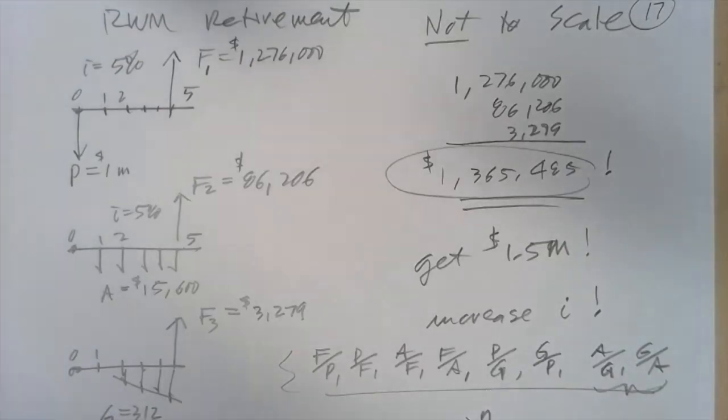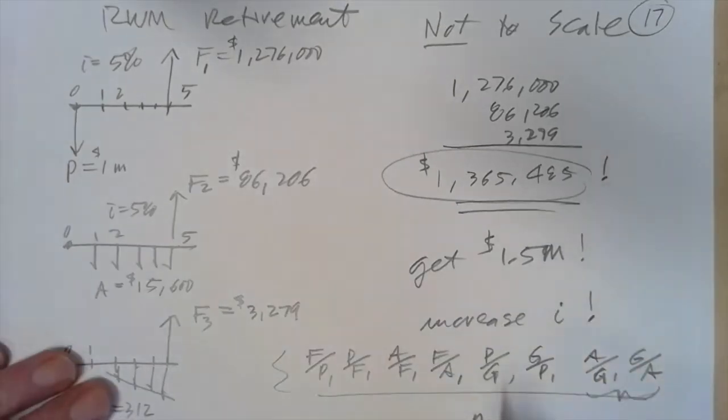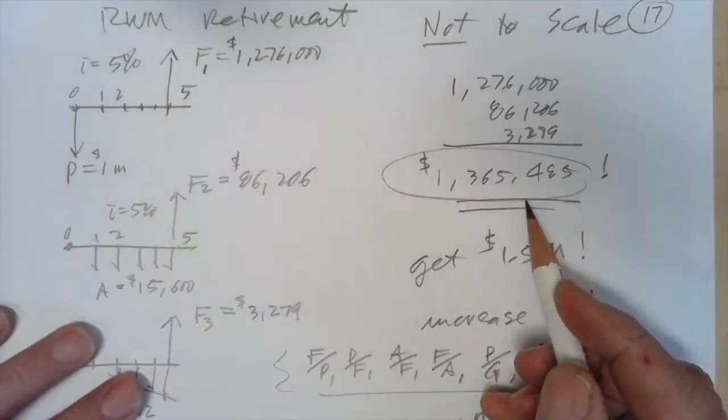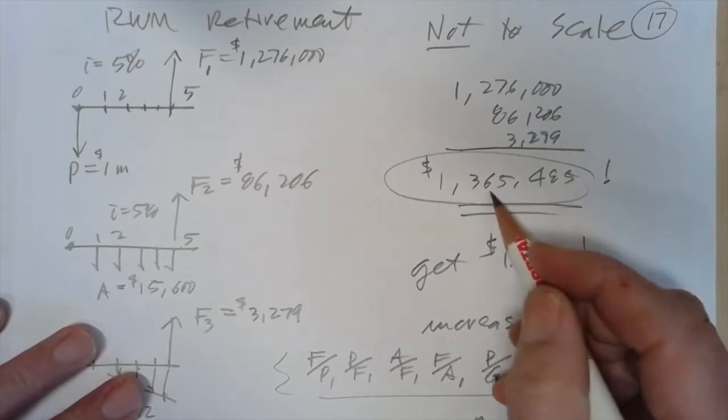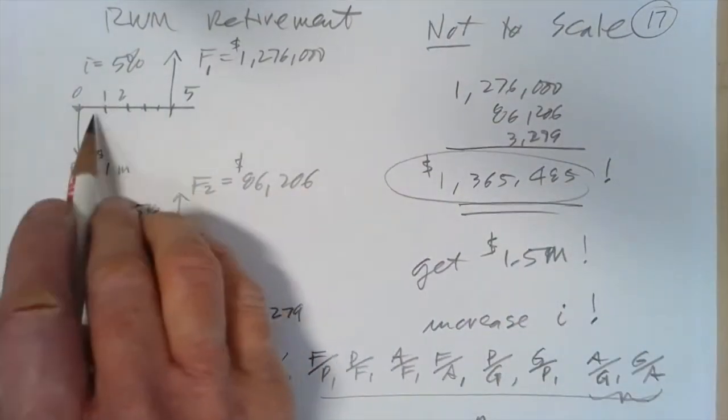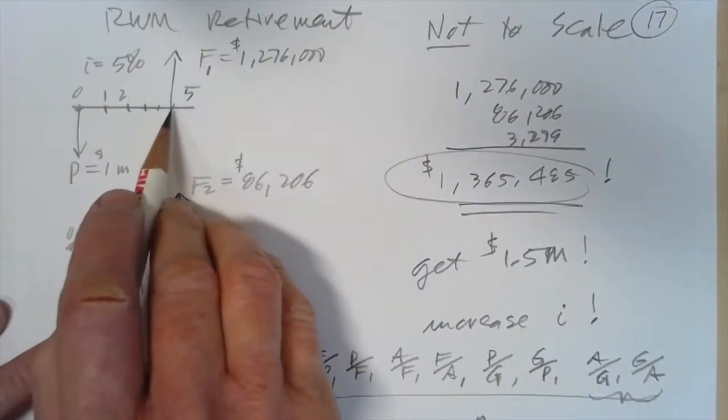Okay, now remember last time I had shown you that with my retirement, I would hopefully have $1.365 million. That's with 5% a year at the end of five years.